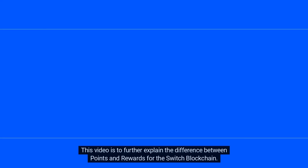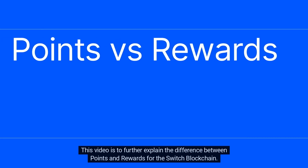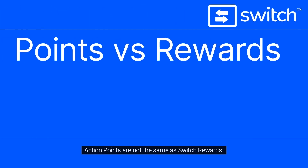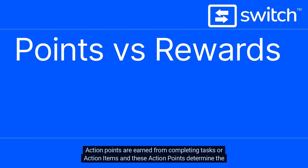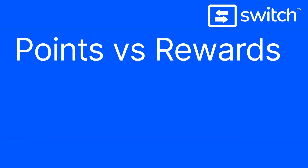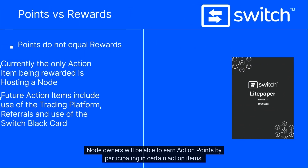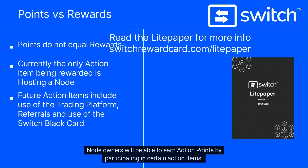This video is to further explain the difference between points and rewards for the Switch blockchain. Action points are not the same as Switch rewards. Action points are earned from completing tasks or action items, and these action points determine the distribution of Switch rewards. Node owners will be able to earn action points by participating in certain action items.